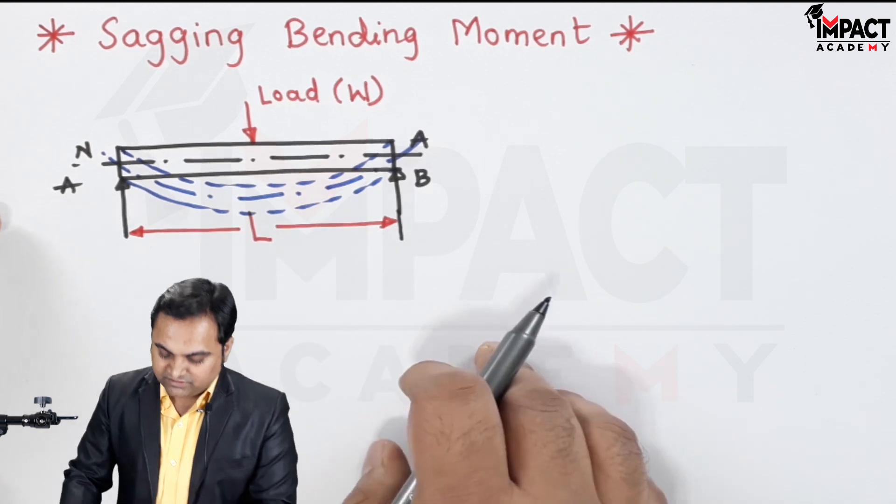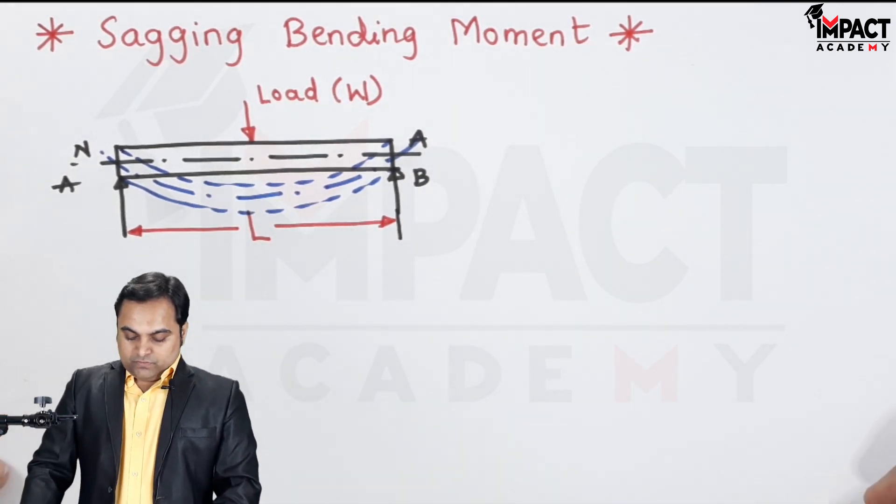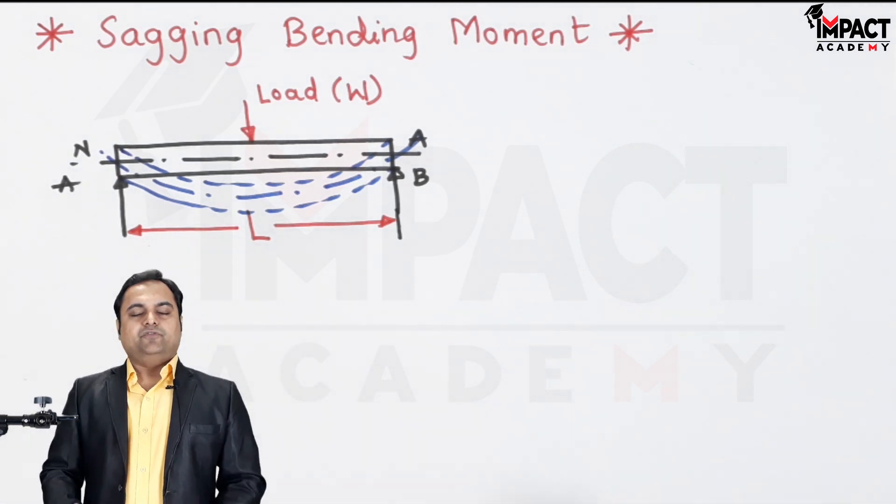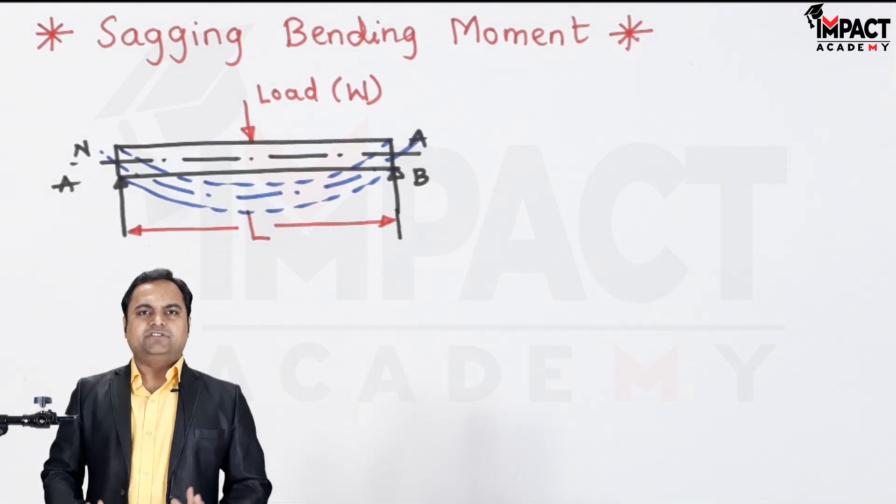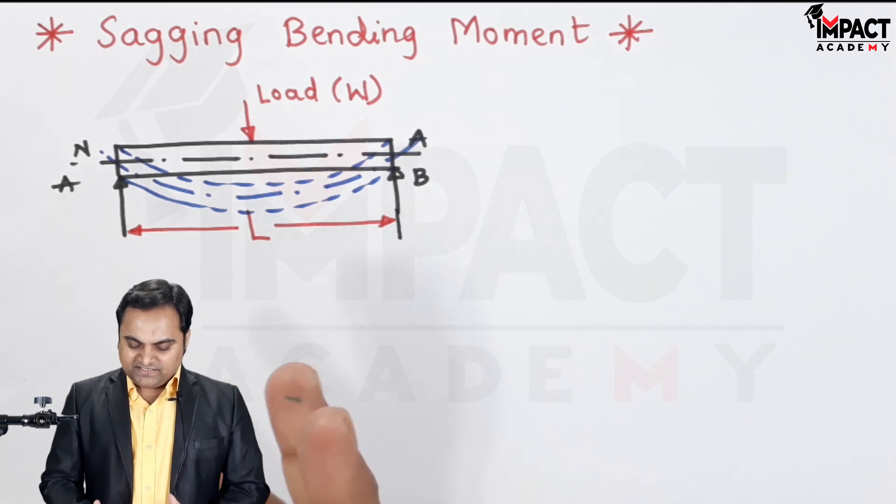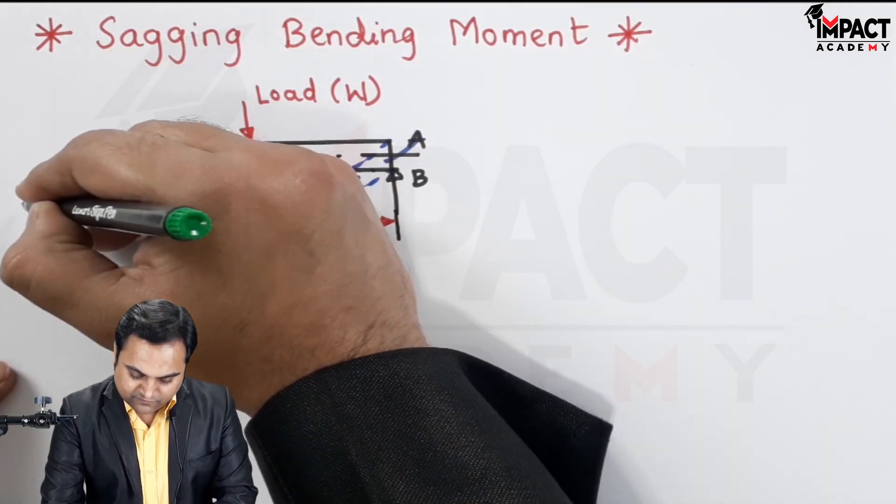And the neutral axis remains same even after bending. Here in case of this sagging bending moment, first of all the effect of shear is not considered. It means we have to only see it for bending, and when I see this bending we can say that the beam is bending in this fashion.